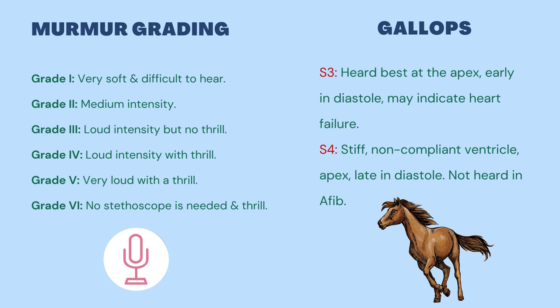Grade 3 is loud intensity but no thrill when you palpate the heart. Grade 4, loud intensity with a thrill. Grade 5, very loud with a thrill. Grade 6, no stethoscope is needed to hear this murmur and you will also feel a thrill.